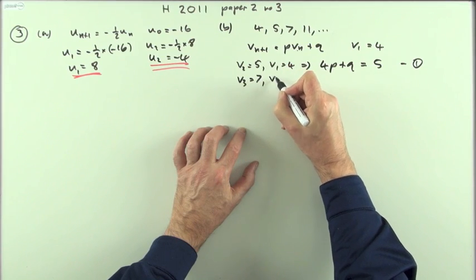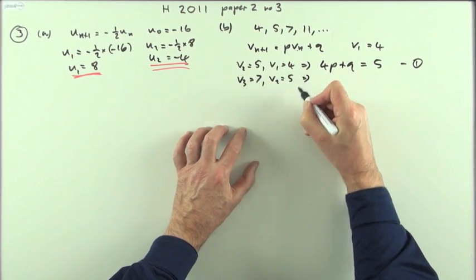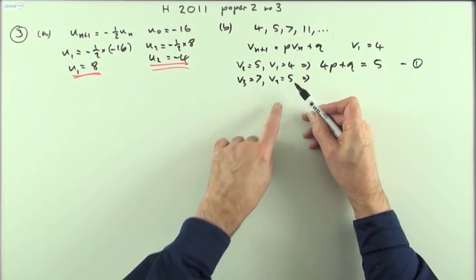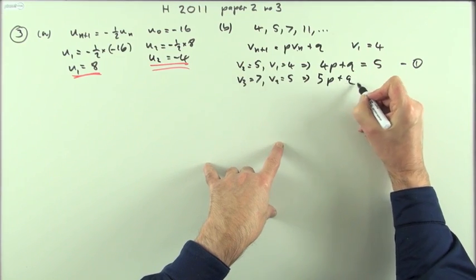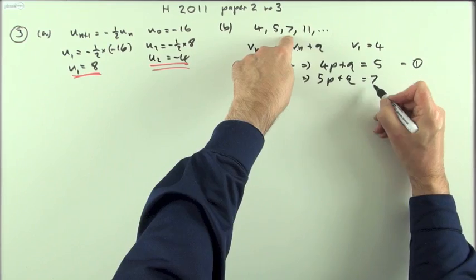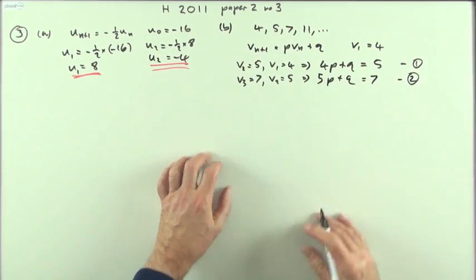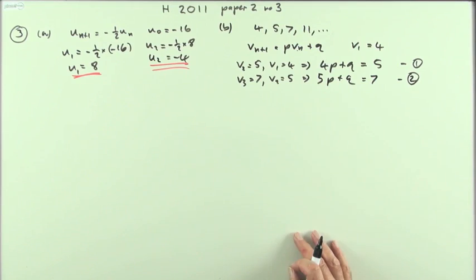Similarly, V3 is 7 and V2 is 5. That means if I put 5 into it, 5 times P plus Q should give me the following term, 7. So there's equation 2. And they're ready to go.